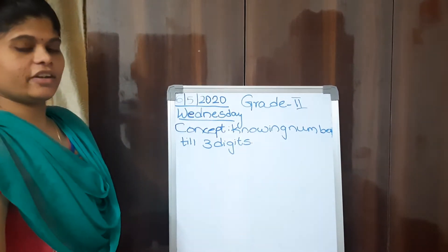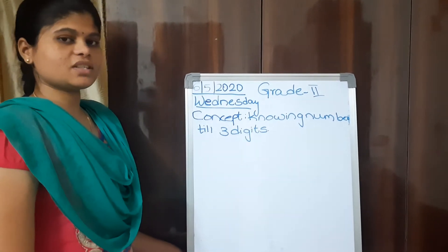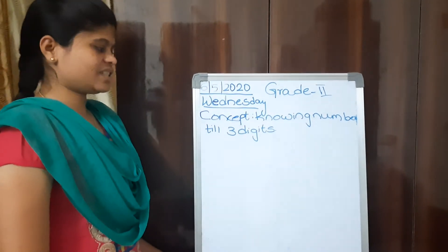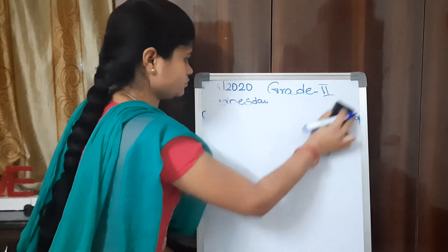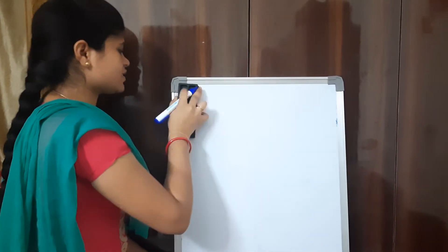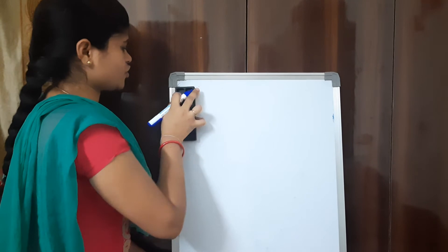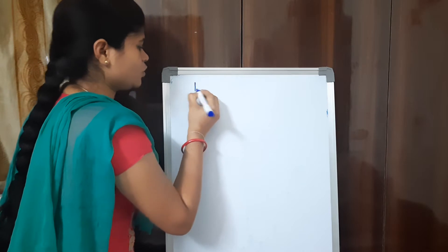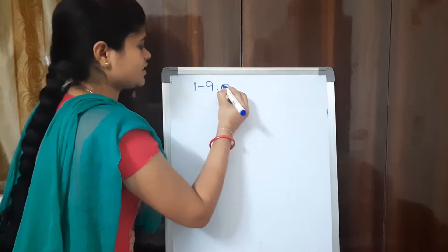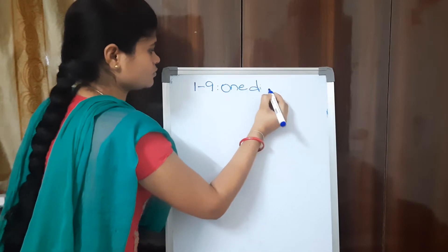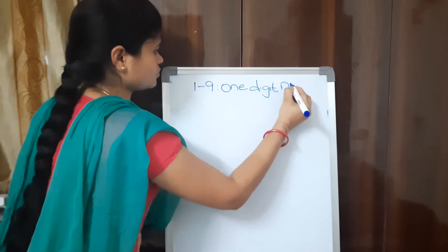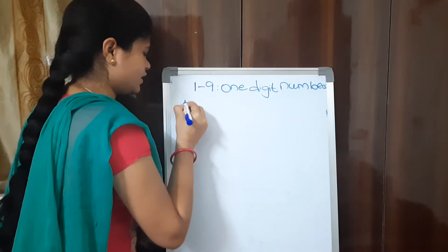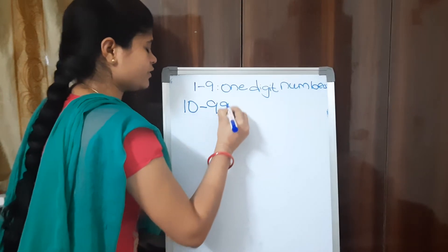In our last class we learnt about knowing numbers till 2 digits. That was the revision class, and in this class we are going to learn about knowing numbers till 3 digits. We will have a small revision of 2 to 3 minutes and then we will start. Numbers 1 to 9 are called 1-digit numbers. After that, 10 to 99 are 2-digit numbers.